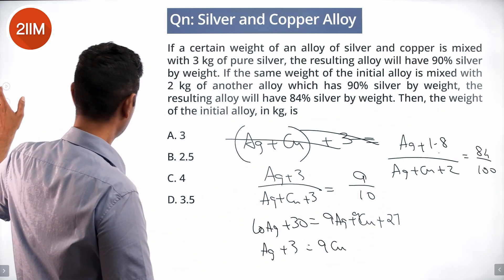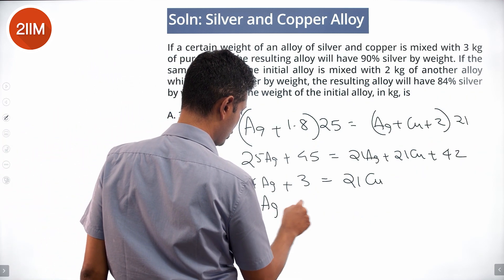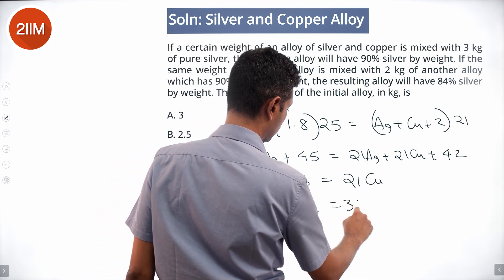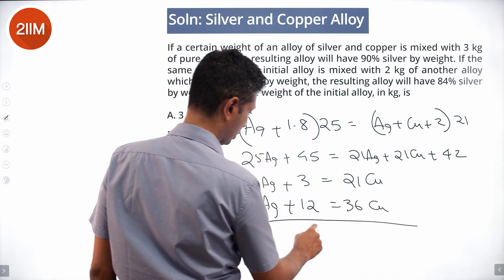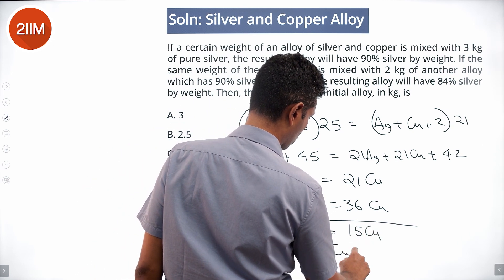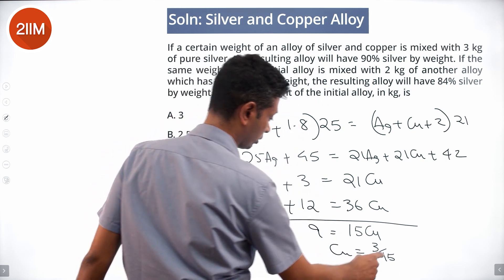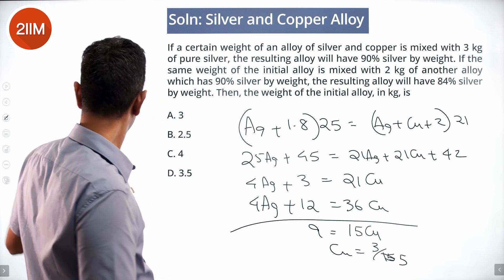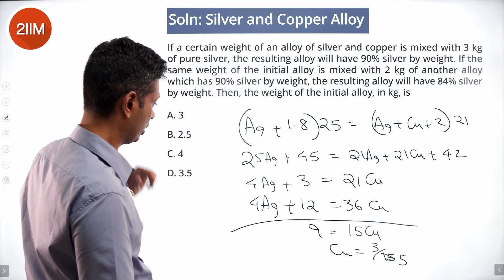From the first equation: Ag plus 3 equals 9 Cu, so 4 Ag plus 12 equals 36 Cu. Subtracting: 36 Cu minus 21 Cu gives 15 Cu equals 9, so Cu equals 9 by 15, which is 3 by 5.